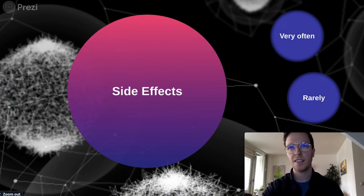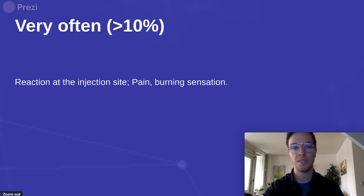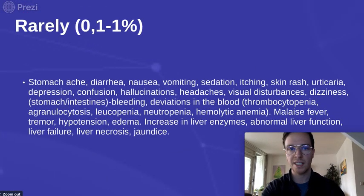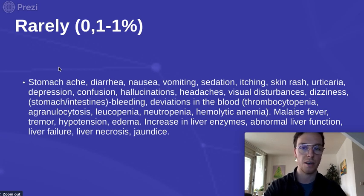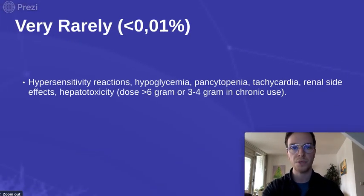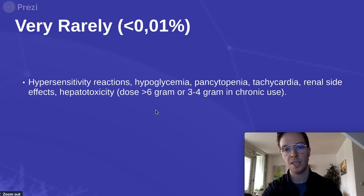Side effects: there are not many. Only with injections do you have a greater than 10% chance of pain and a burning sensation at the injection site. Most people use it orally or rectally and won't have this. Very rarely — less than 1% — are side effects such as stomach ache, diarrhea, nausea, vomiting, itching, and skin rash. Even more rare, less than 0.1%, are hypersensitivity reactions and liver damage. For liver damage, the person needs to be using more than 6 grams a day, or 3 to 4 grams chronically.